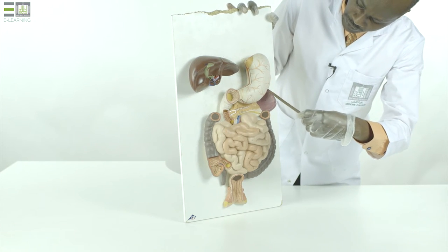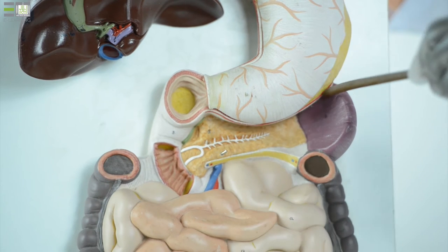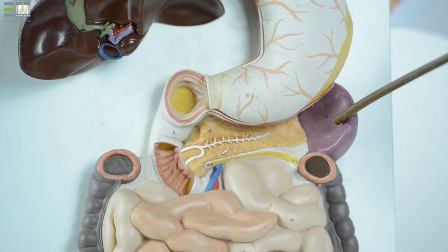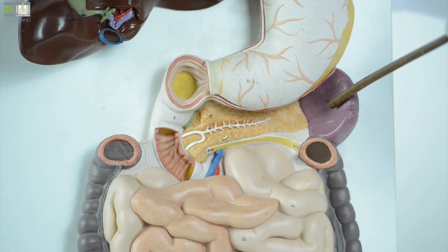Attached to the greater curvature of the stomach, there is greater omentum. And between the stomach and the spleen, there is the gastro-splenic ligament.